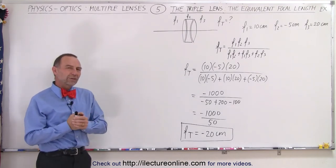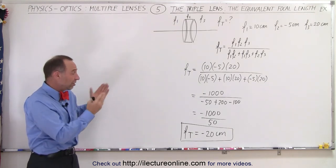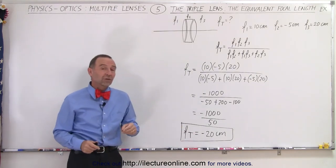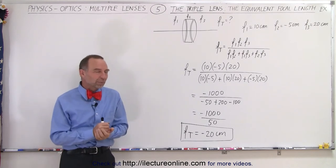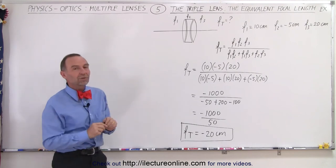Now you may wonder, well why would they want to do something like that? Why would they want to put three lenses there when you could simply replace it by a single lens of minus 20 centimeters? Well, the reason for that is that in a practical sense, when you have multi-lens systems like that,